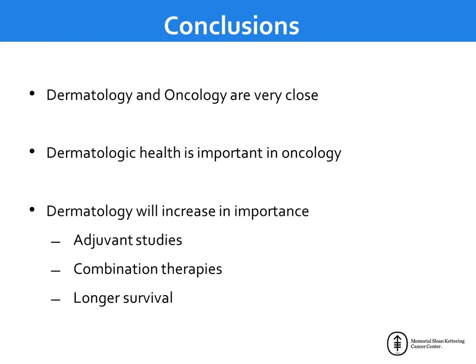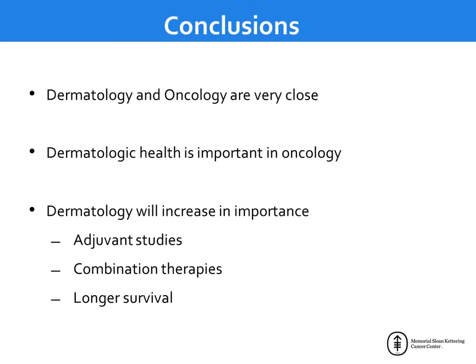In conclusion, I hope I have convinced you that dermatology and oncology are very close disciplines and it is important for us to communicate well and know each other. Dermatologic health is important in your patients and will increase in importance as patients enter adjuvant therapies and are less willing to tolerate quality of life issues. With combination therapies — such as ipilimumab and nivolumab — patients develop severe rash in over half of cases. The wonderful work you are doing is letting patients live longer, and now they are able to worry about these quality of life issues.